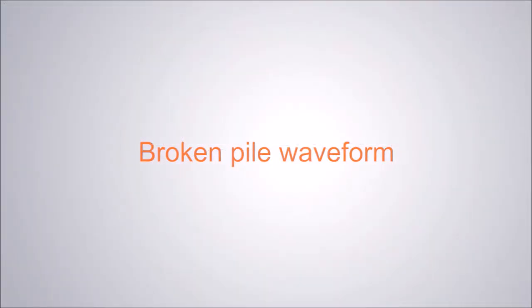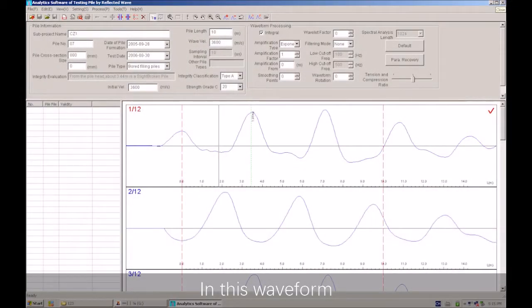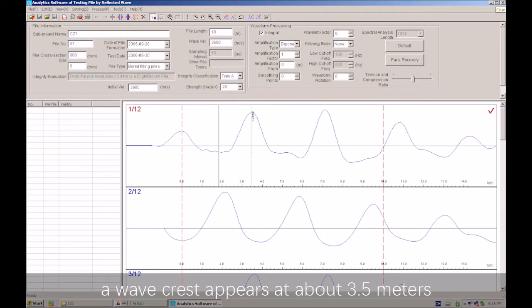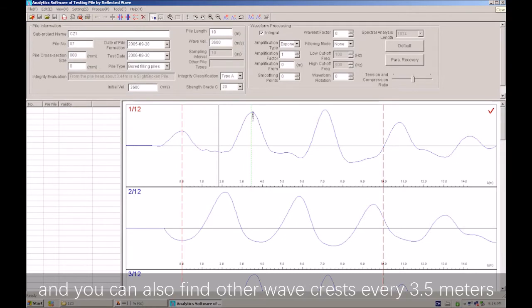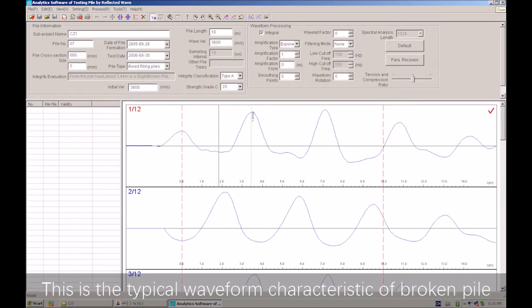Broken pile waveform: In this waveform, the first wave crest is the pile head. This pile is 10 meters, so the pile toe wave crest is supposed to appear at 10 meters, but it doesn't. You can see a wave crest appears at about 3.5 meters, and you can also find other wave crests every 3.5 meters. This is the typical waveform characteristic of a broken pile.